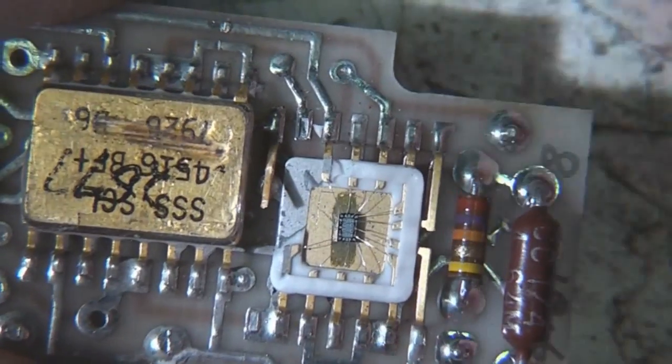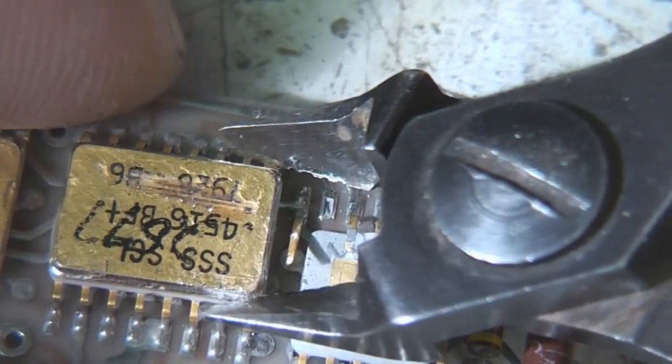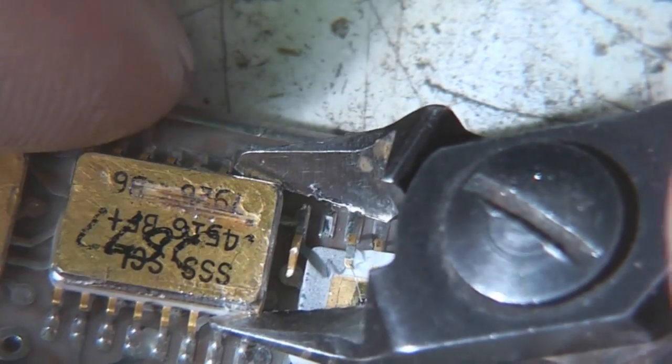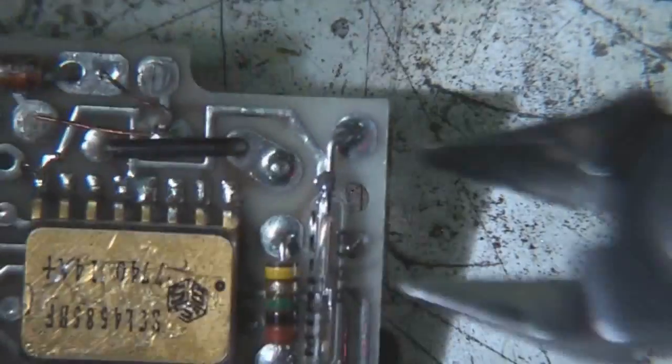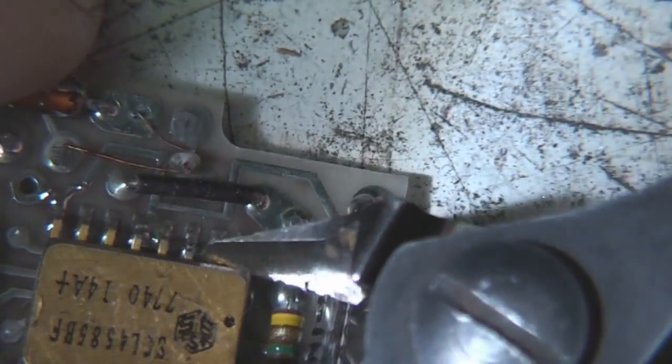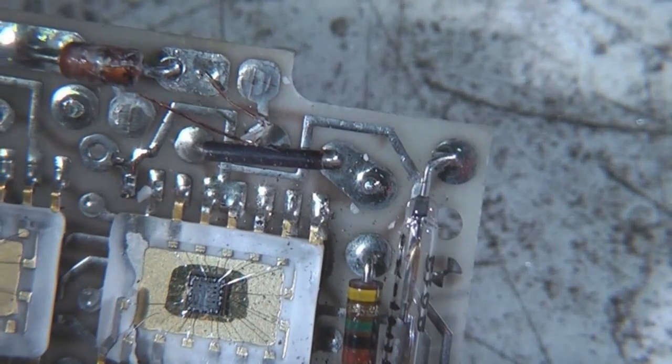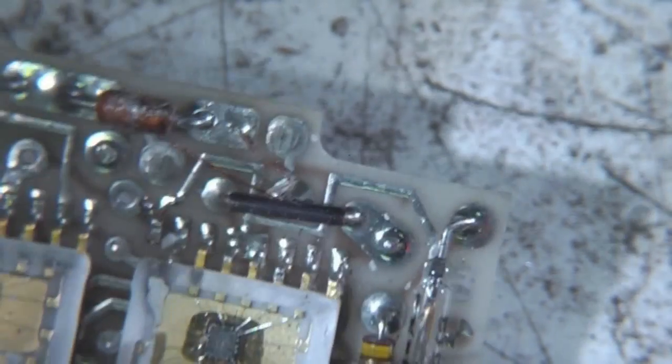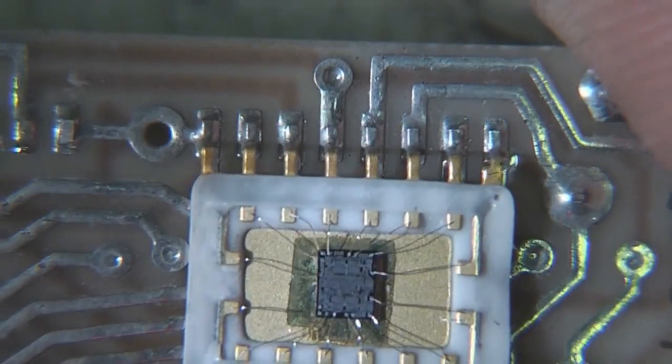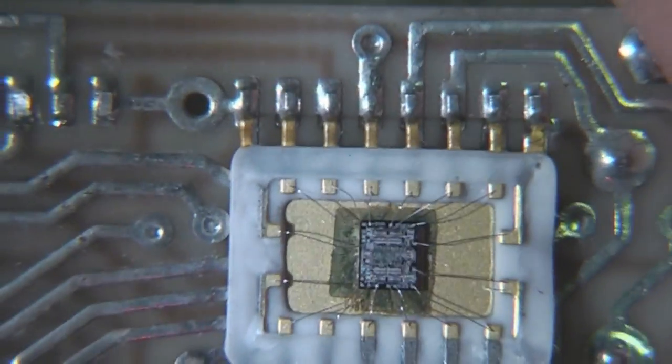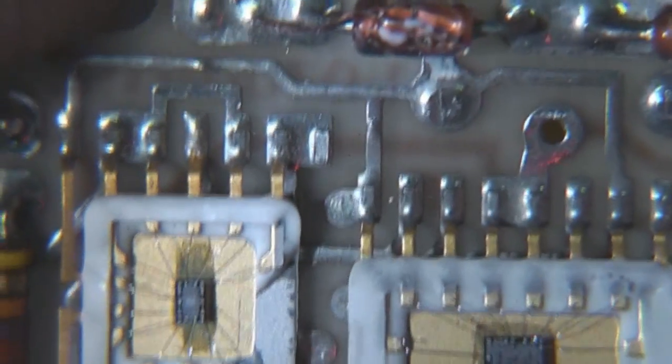A fairly small single die in there. These could even be military spec versions of bog standard 4000 series CMOS or something fairly simple like that. Obviously being 70s, these aren't particularly high levels of integration. You can almost see the circuit features at this magnification, so we should be able to see a bit more detail under the microscope.